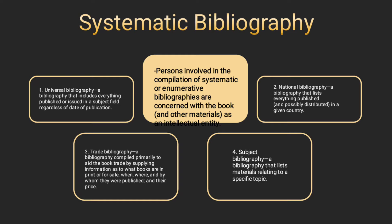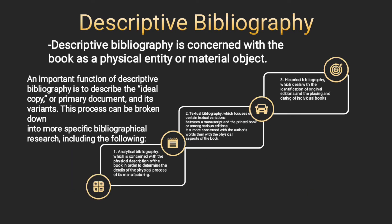Types of systematic bibliography include: one, universal bibliography — a bibliography that includes everything published or issued in a subject field regardless of date of publication; two, national bibliography — a bibliography that lists everything published, and possibly distributed, in a given country; three, trade bibliography — a bibliography compiled primarily to aid the book trade by supplying information as to what books are in print or for sale, when, where, and by whom they were published, and their price; four, subject bibliography — a bibliography that lists materials relating to a specific topic. Descriptive bibliography is concerned with the book as a physical entity or material object. An important function of descriptive bibliography is to describe the ideal copy, or primary document, and its variants.